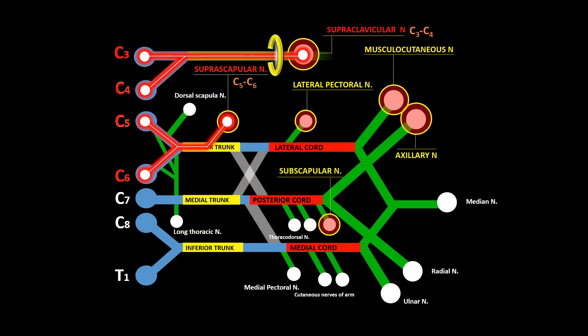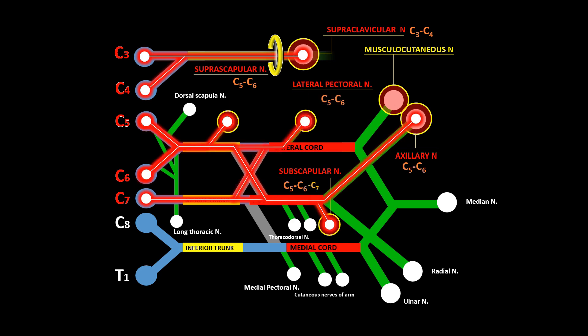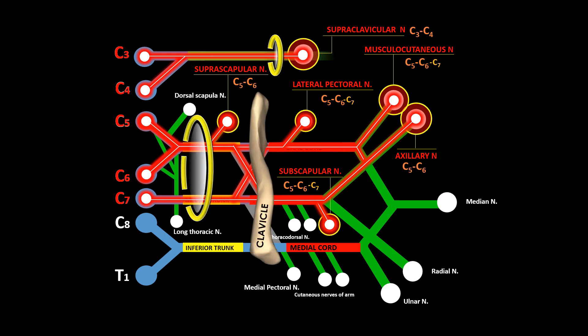Considering that the suprascapular and axillary nerves originate from the upper trunk at C5 and C6 roots, and that the subscapular, lateral pectoral, and musculocutaneous nerves originate in the upper trunk with contributions from the middle trunk at C5, C6, and C7 — to comprehensively address all branches involved in shoulder innervation with a single puncture, one should choose a supraclavicular approach to reach both the superior and middle trunks with local anesthetic.